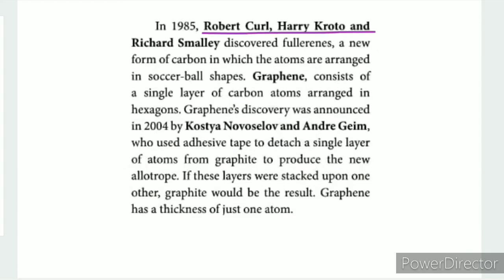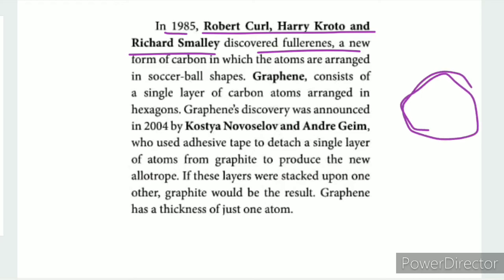This is Robert Curl, Harold Kroto, and Richard Smalley. In 1985, they discovered Fullerene, a new form of carbon. Fullerene has a shape similar to a volleyball or football. This shape consists of hexagons, and the picture is shown in the lesson.